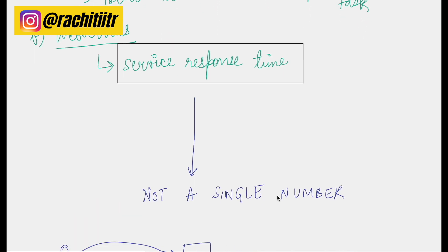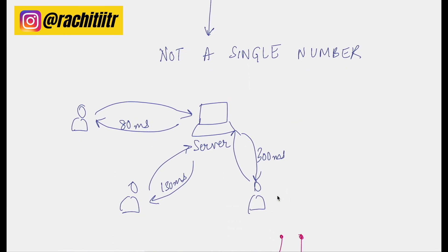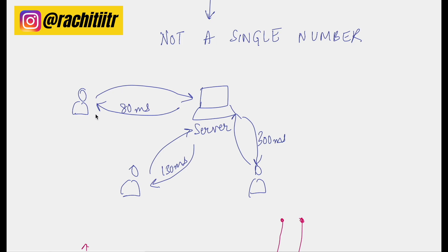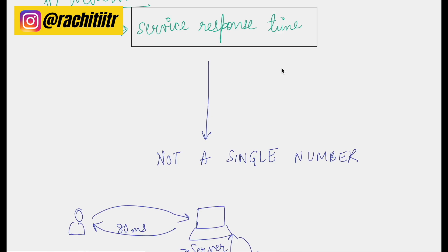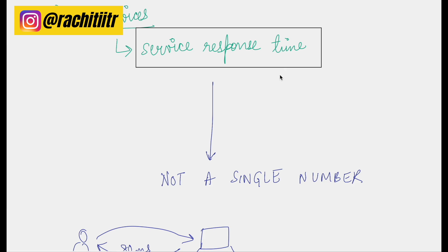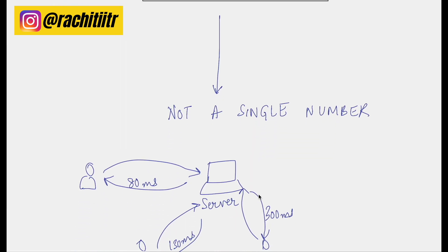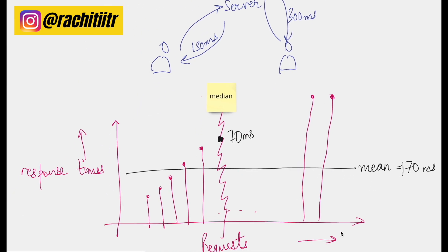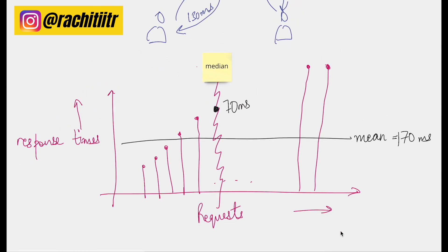Service response time is never a single number. If you have a server, one user might get a response in 80 milliseconds, another in 130 milliseconds, while someone else gets it in 300 milliseconds. It's not that you hit a service, measure the response time, and that's it — it's always a distribution. What you do is collect a lot of requests over a given time window, sort them, and plot response times on the y-axis with all requests on the x-axis.